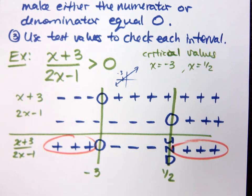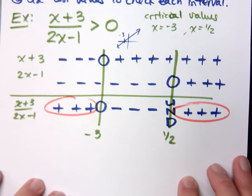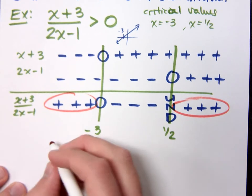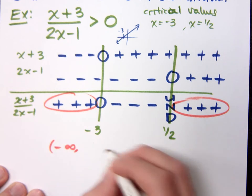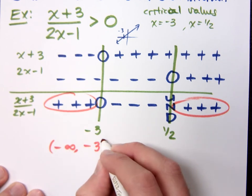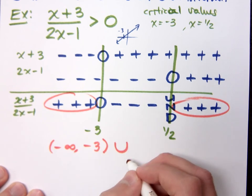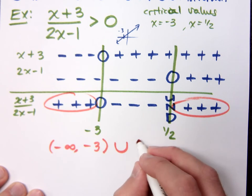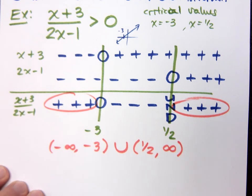Do we get to include these endpoints? No — it's strictly greater than, not equal to. So in interval notation: from negative infinity to negative 3, open parentheses; union; open parentheses from one half to positive infinity.